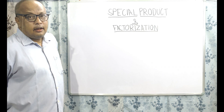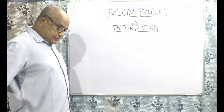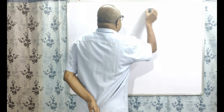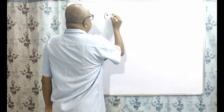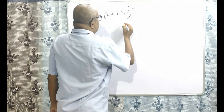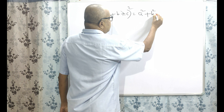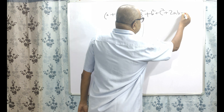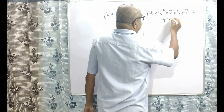Dear students, today I am going to derive two formulas under special product and factorization. The first formula is: A plus B plus C whole square is equal to A square plus B square plus C square plus twice AB plus twice AC plus twice BC.